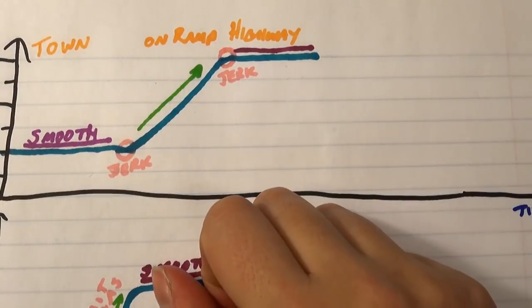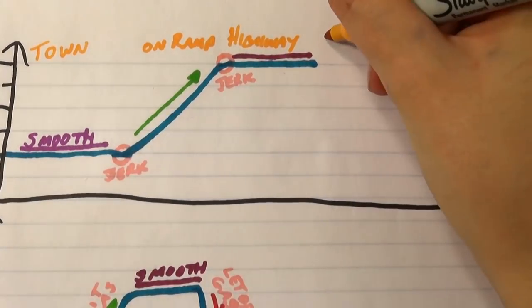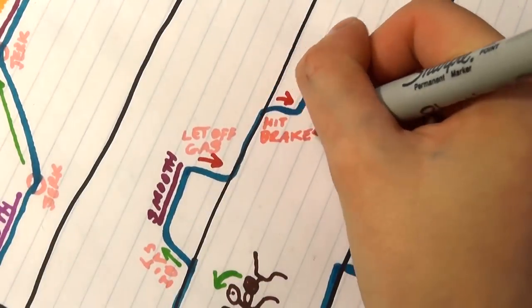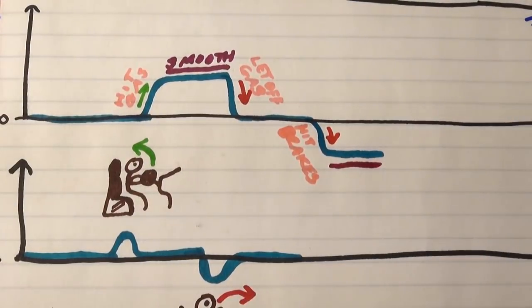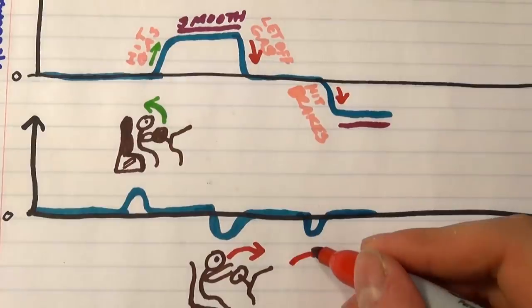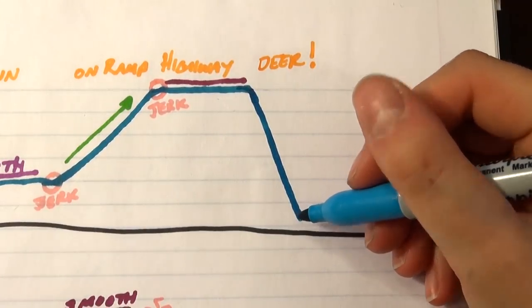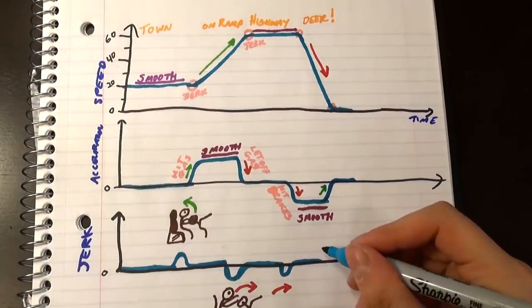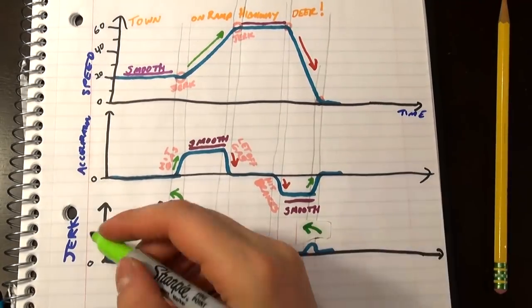So then you're going a constant 60 miles an hour, but you see way up ahead there's a family of deer on the road, so you hit the brakes and feel a jerk towards the windshield, and then you smoothly slow down for a bit, aka decelerate, aka negatively accelerate, until you reach a full stop. And at that point, you feel one last jerk that pushes you back into your seat.